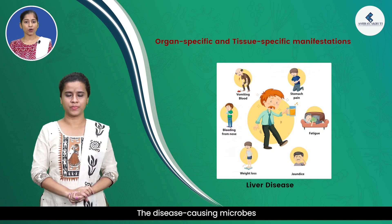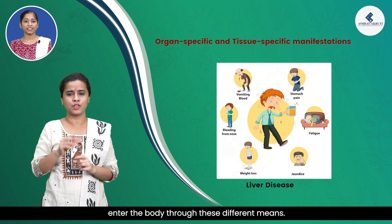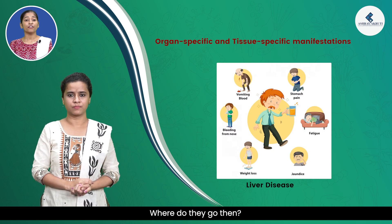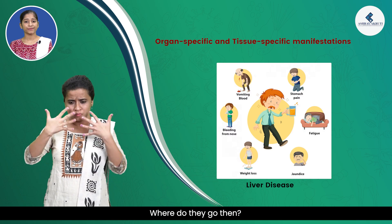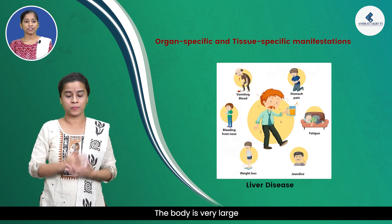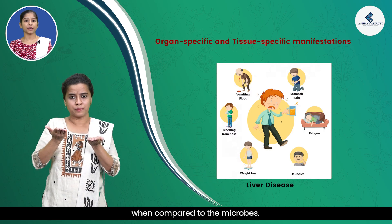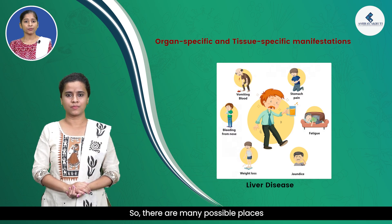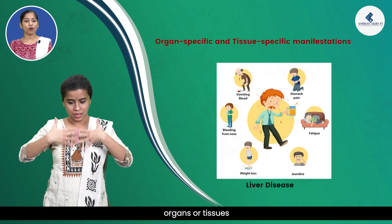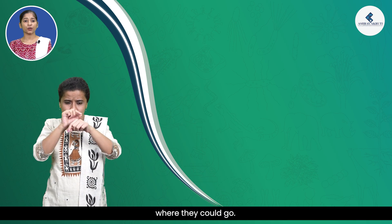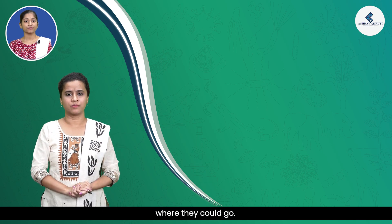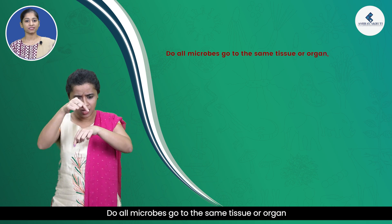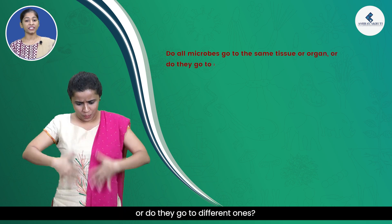The disease-causing microbes enter the body through these different means. Where do they go then? The body is very large compared to the microbes, so there are many possible places, organs, or tissues where they could go. Do all microbes go to the same tissue or organ, or do they go to different ones?